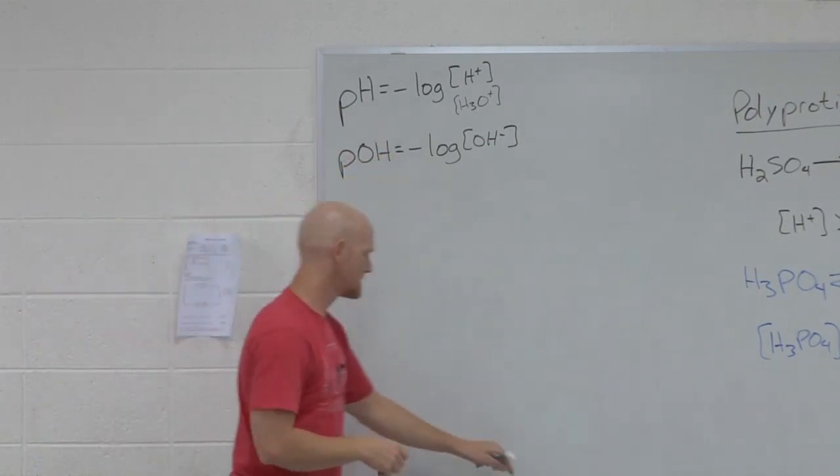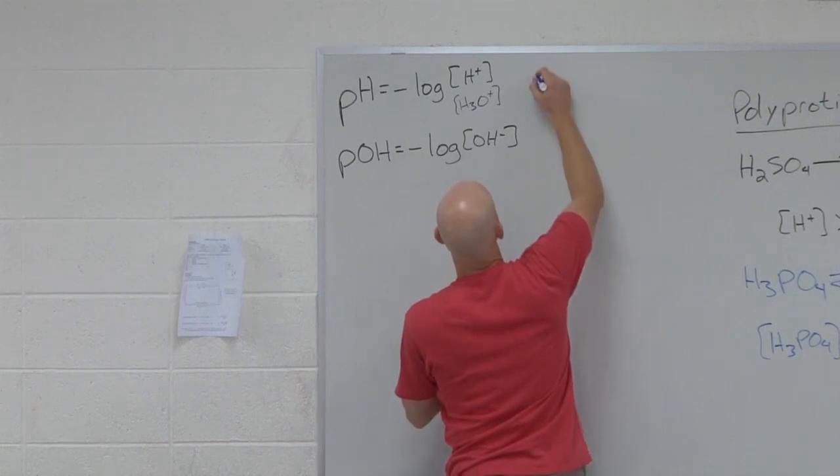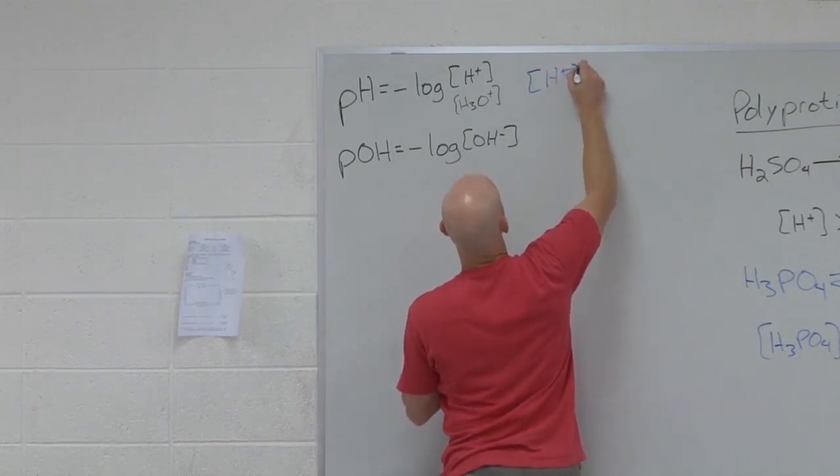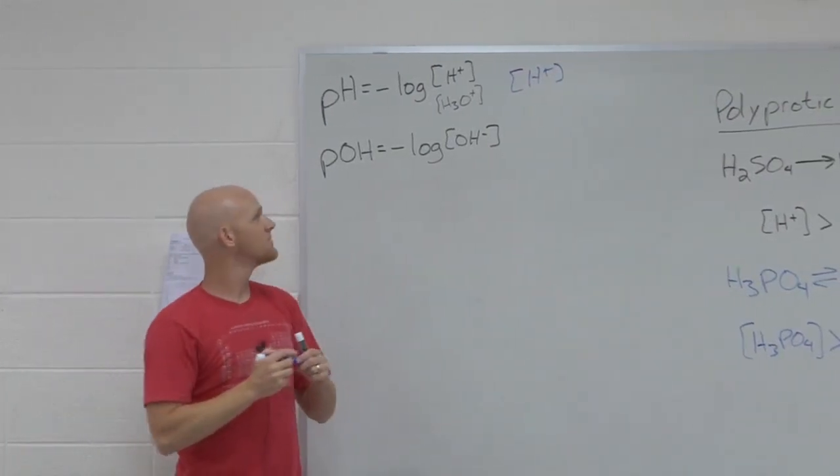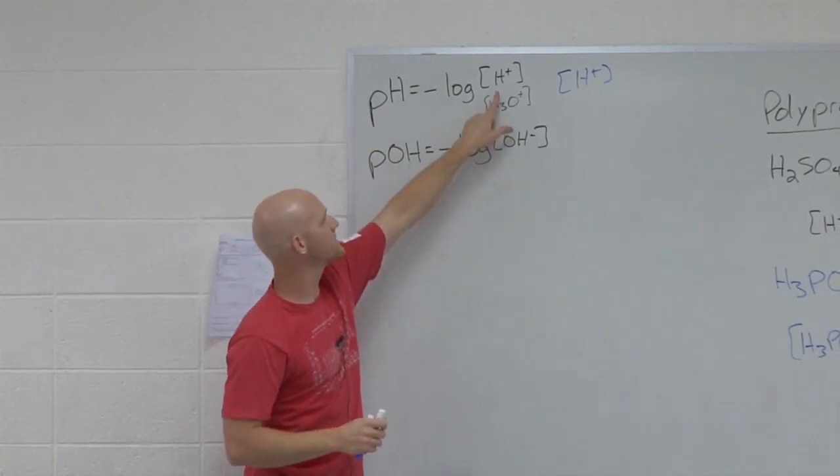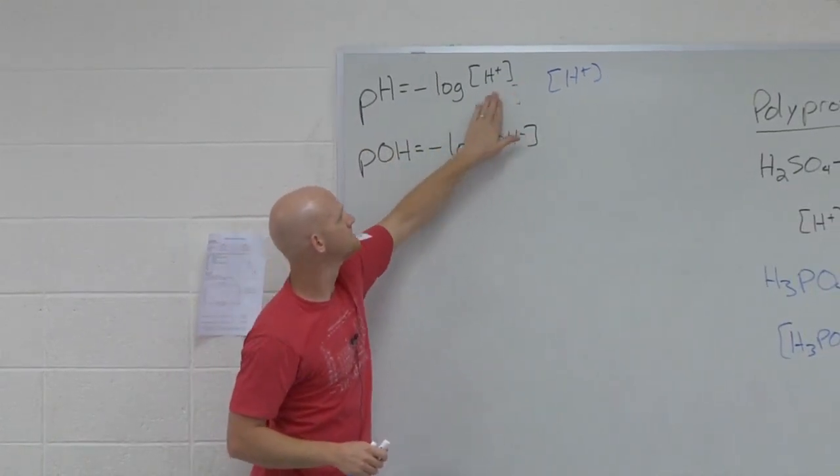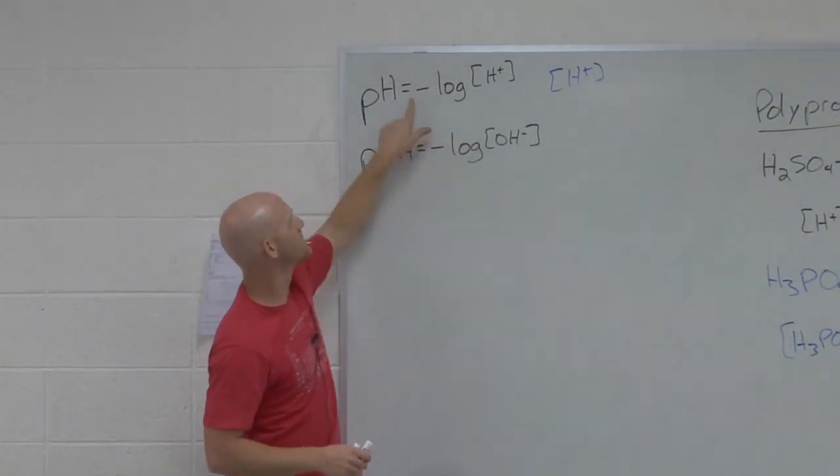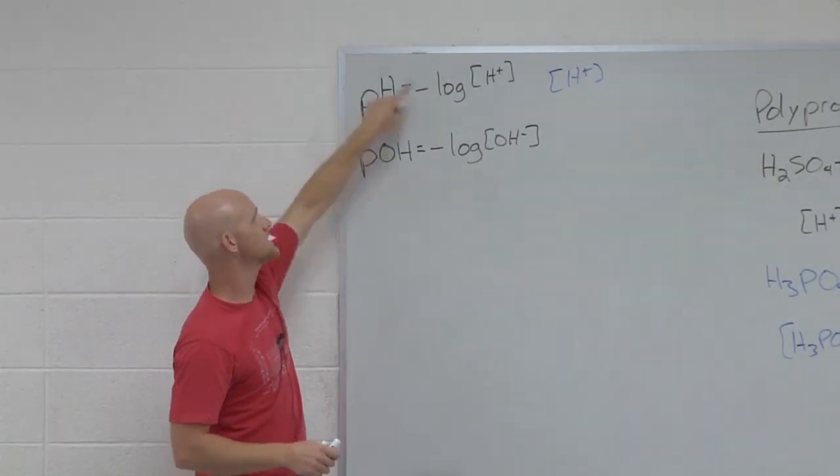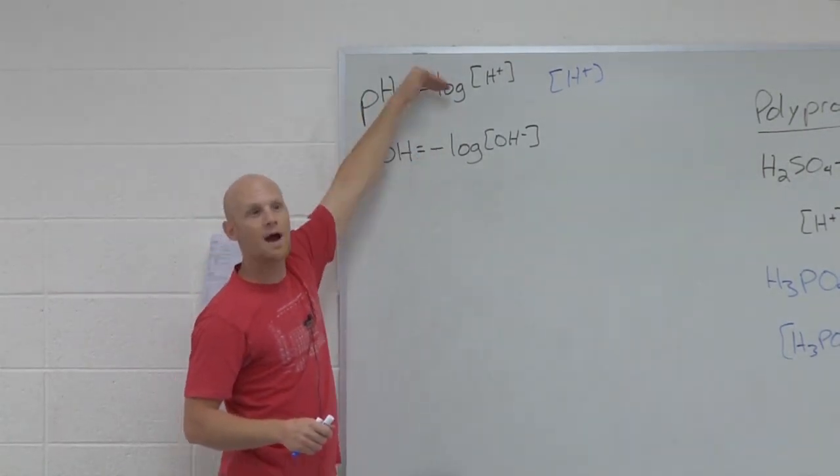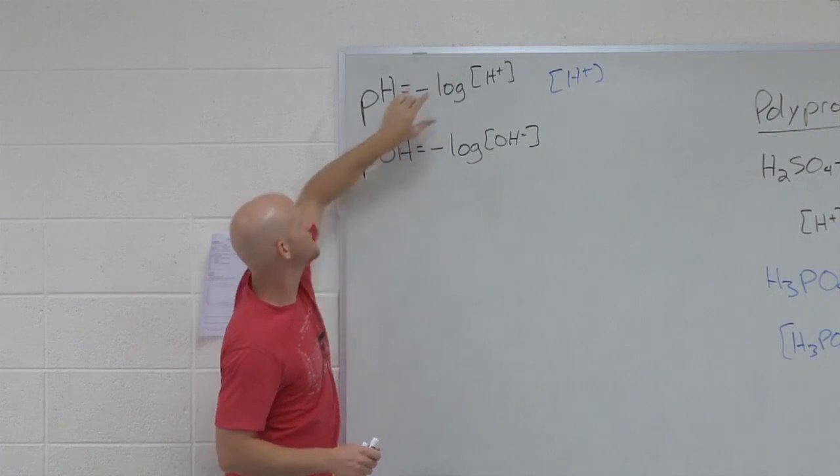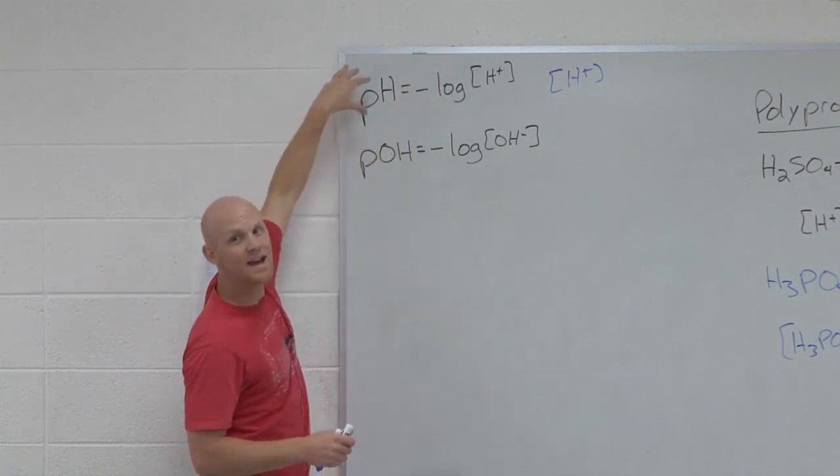If you rearrange these, in this case solve for the H plus ion concentration. If you want to rearrange this expression and solve for H plus what would you do? Negative pH. Yeah, you'd put the negative on the other side so you have negative pH. And then to get rid of the log it's 10 to the power of. And so that would get rid of the log and you'd end up with on this side 10 to the negative pH.